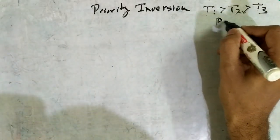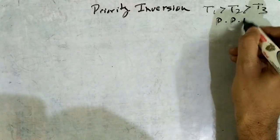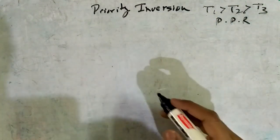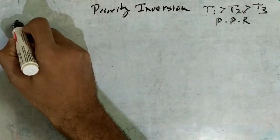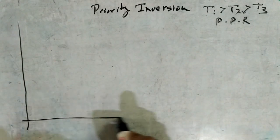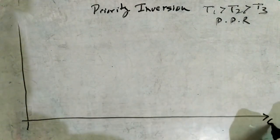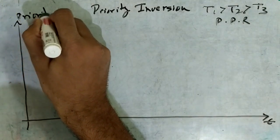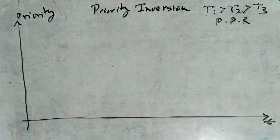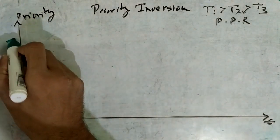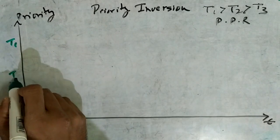We will assume a priority-based preemptive round-robin scheduler, as is the case with Linux and other systems. We will plot the priority versus time of execution, where T1 has greater priority than T2, which is in turn greater than T3.